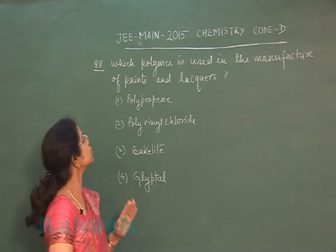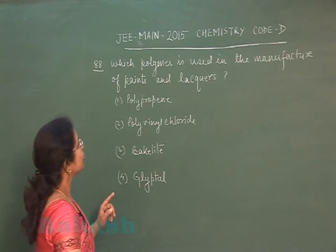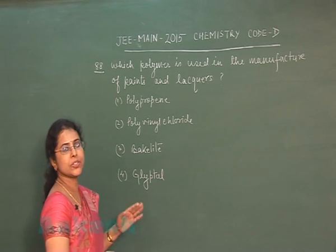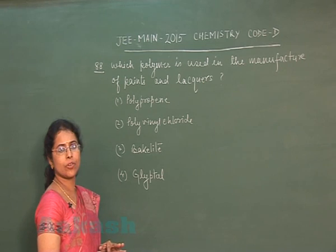So next question of paper is question number 88. Which polymer is used in the manufacture of paints and lacquers? Four options are given.